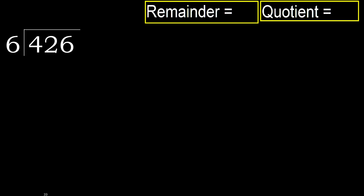426 divided by 6. 4 is less than 6, therefore next. 42 is not less, therefore with 42. 6 multiplied by which number is nearest to 42 but not greater?